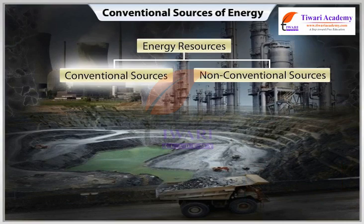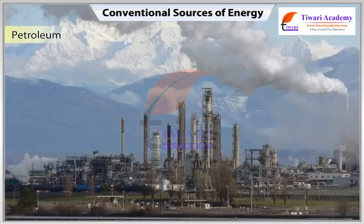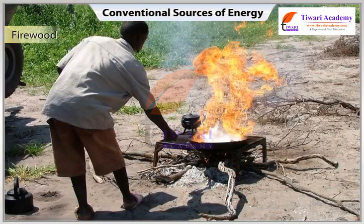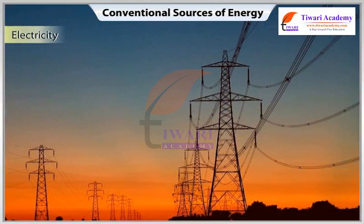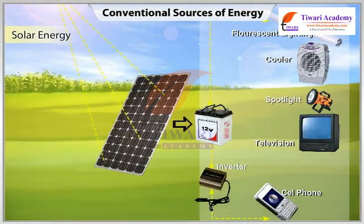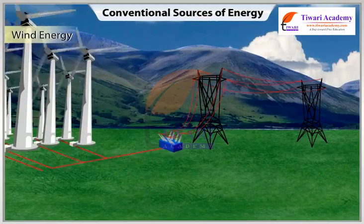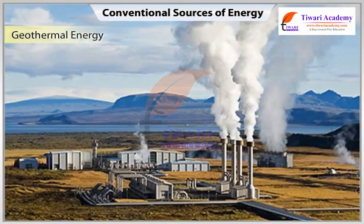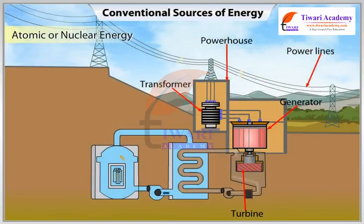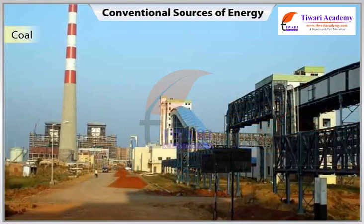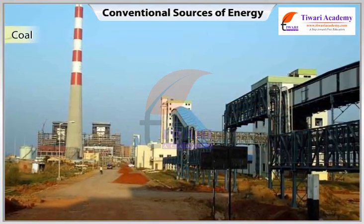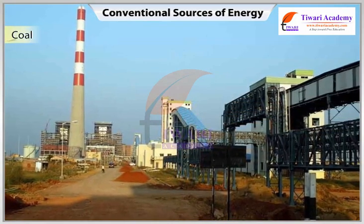Conventional sources include coal, petroleum, natural gas, firewood, cattle dung cake, and electricity. Non-conventional sources include solar, wind, tidal, geothermal, biogas, and atomic or nuclear energy. Coal is primarily burned for the production of electricity or heat and is also used for industrial purposes.